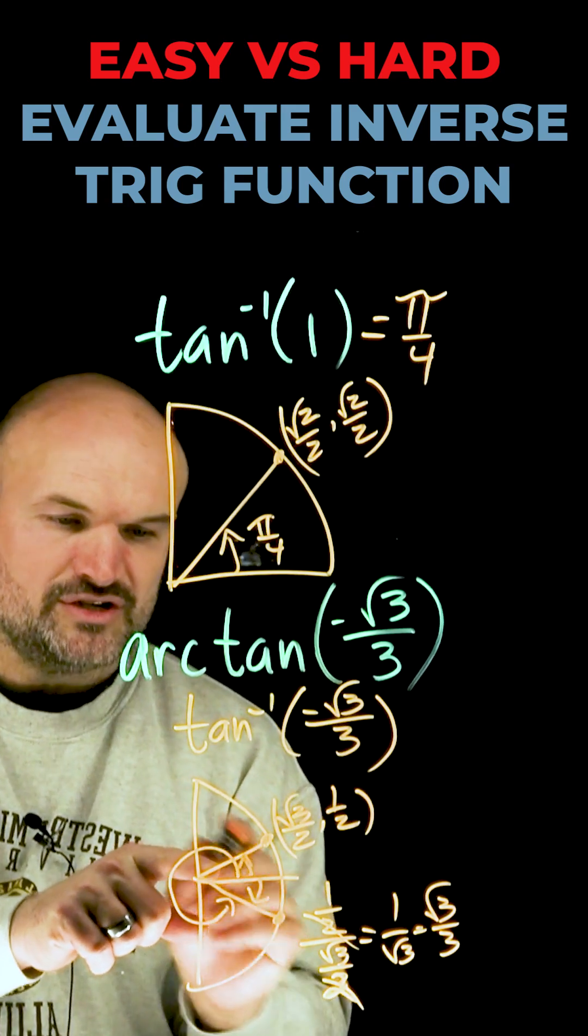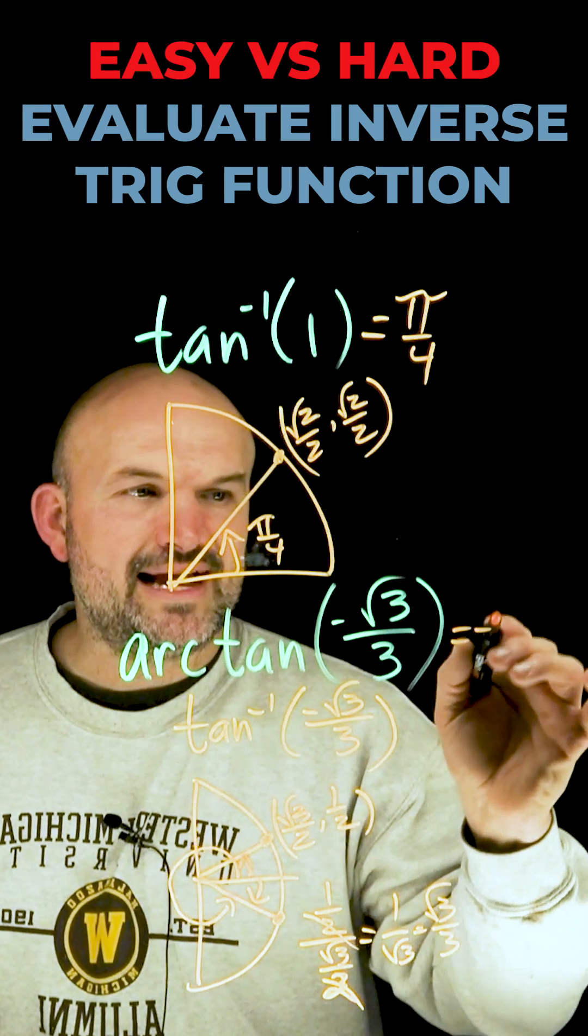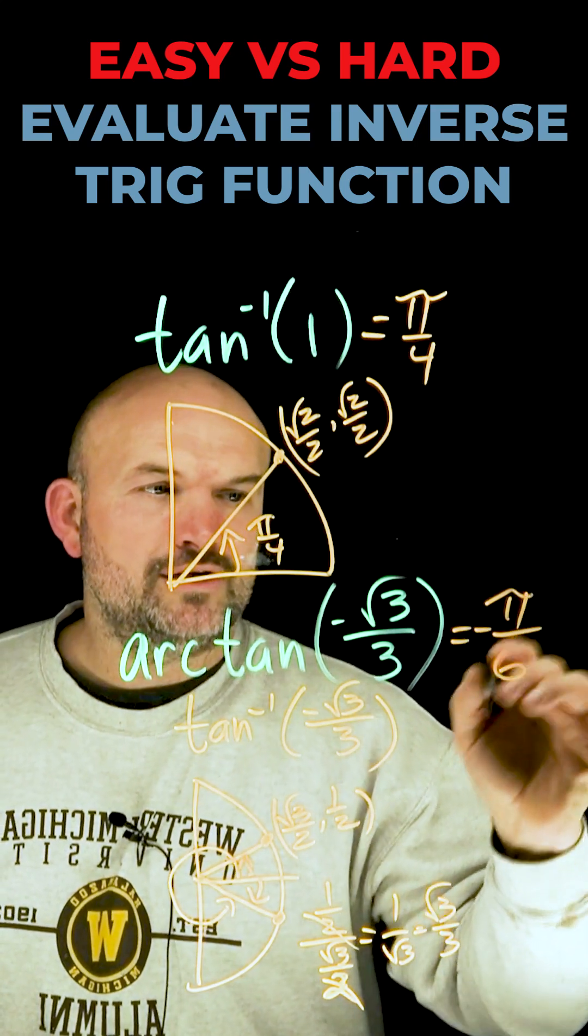So this angle in the first quadrant is pi over 6. So if I want to take the negative angle, then simply my answer is going to be negative pi over 6.